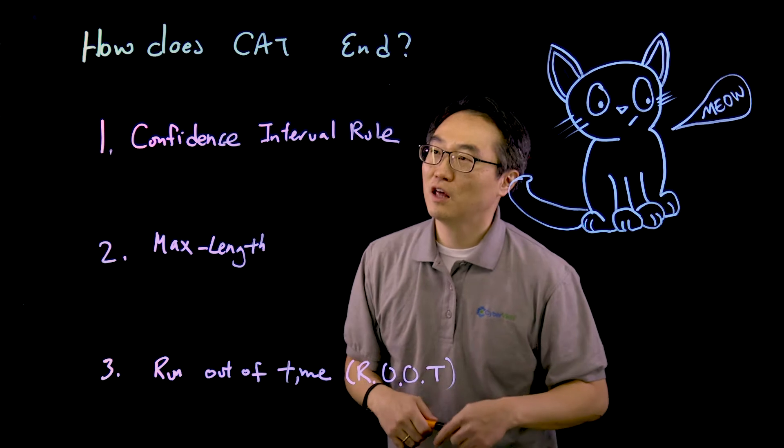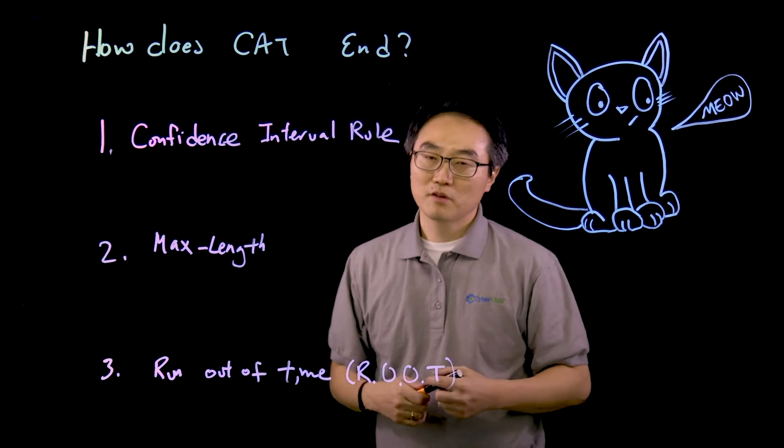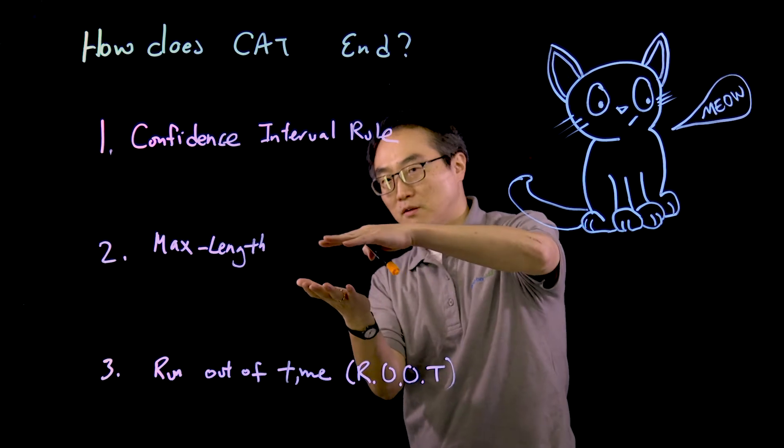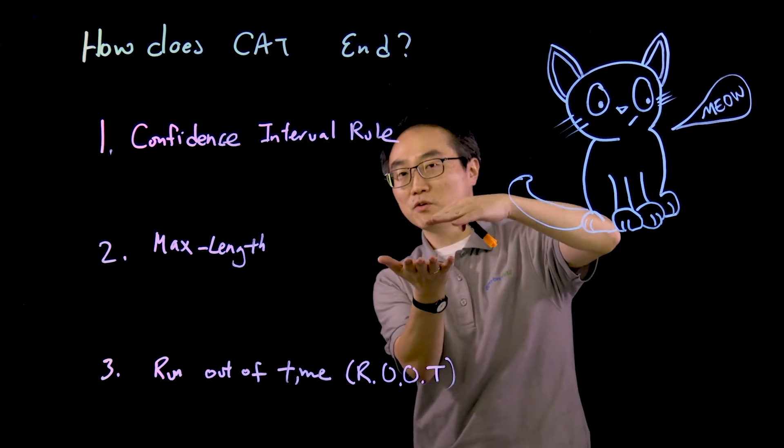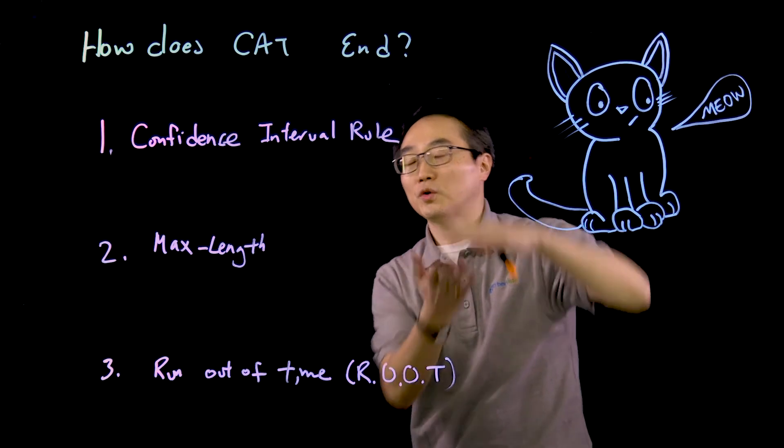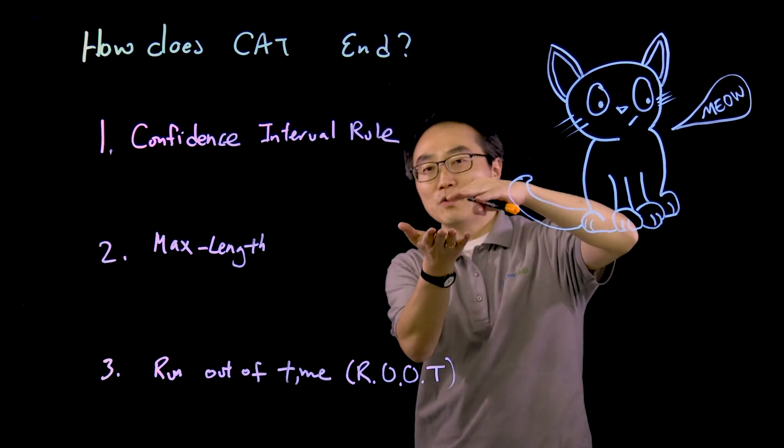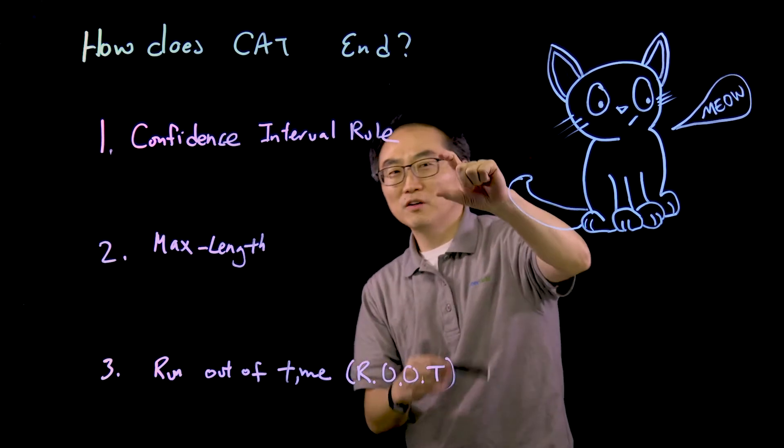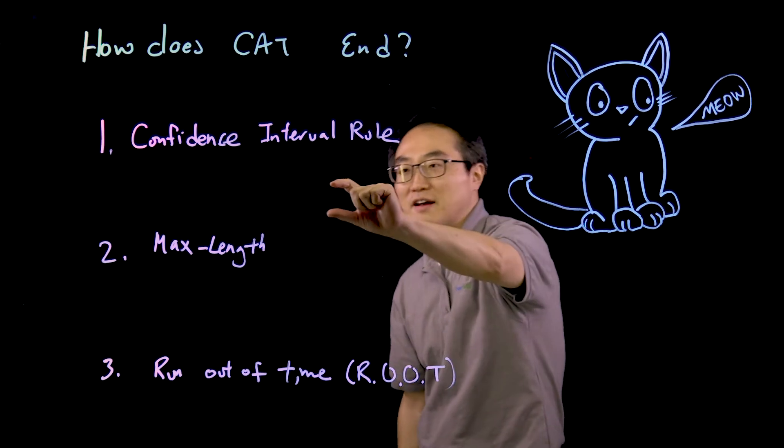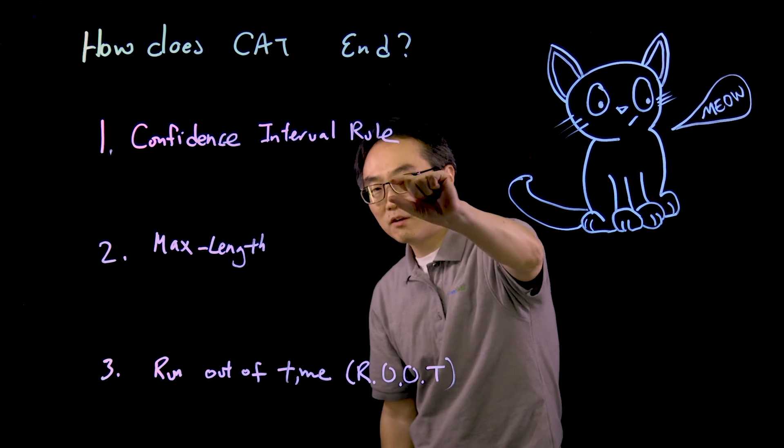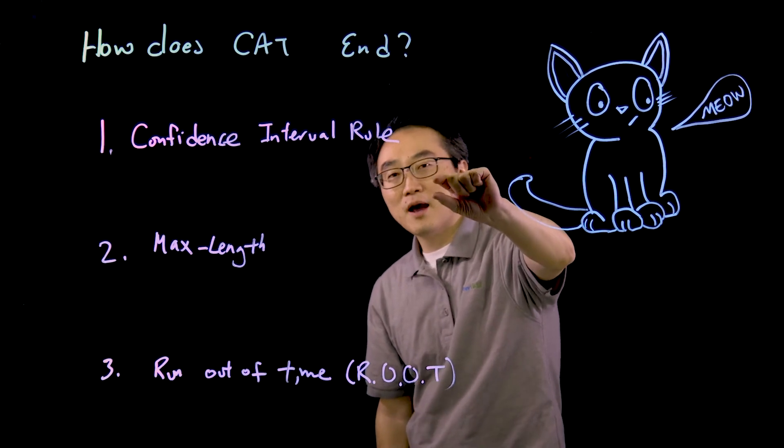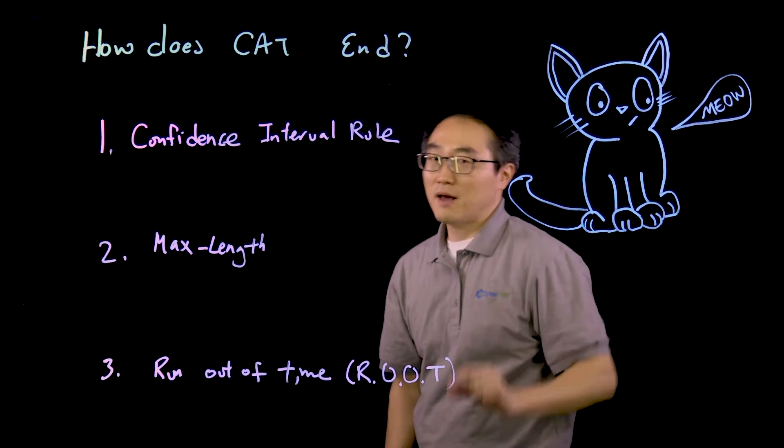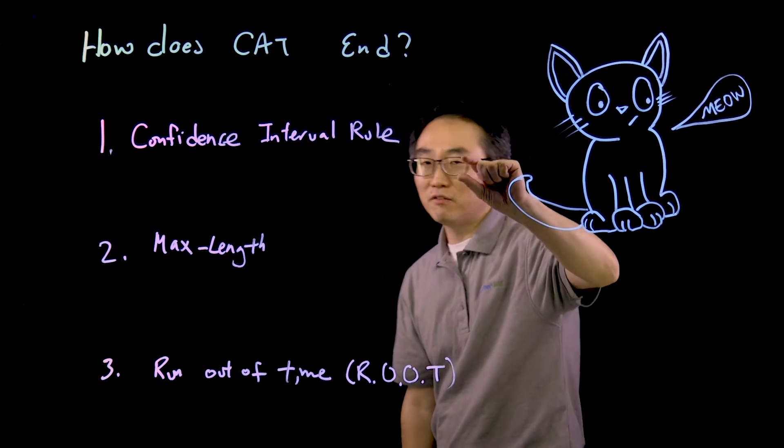One is the Confidence Interval Rule. As I talked about earlier, the computer takes you through different questions and becomes more and more sure whether you're falling above or below the passing line. That's called the interval. As they find out more about you, the interval becomes narrower and narrower, and that interval is moving either below or above the passing line.